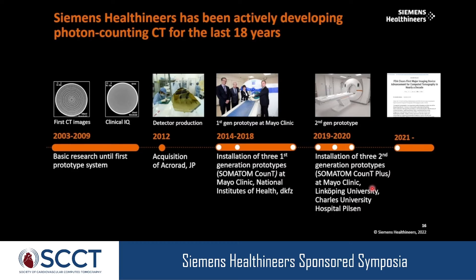The development of photon counting CT at Siemens has been ongoing for almost 20 years, starting in 2003 with first images and achieving clinical image quality. In 2012, Siemens acquired the company Acorat, which had the cadmium telluride detector material. Prototypes were installed at the Mayo Clinic, NIH, and the German Cancer Center; a second generation came in 2019; and in 2021, FDA 510k clearance was granted — described as the first major imaging device advance for CT in nearly a decade.